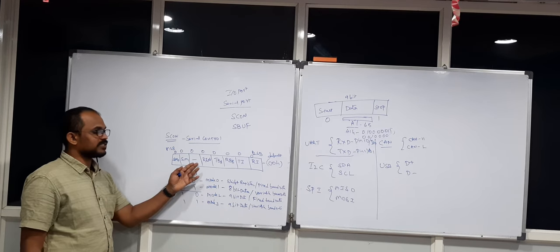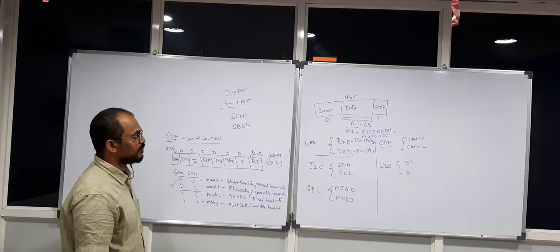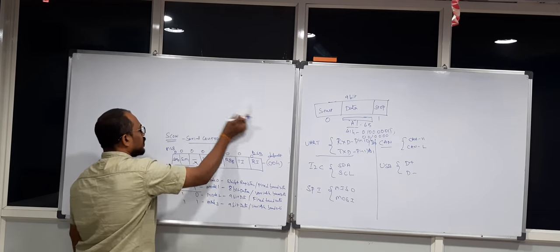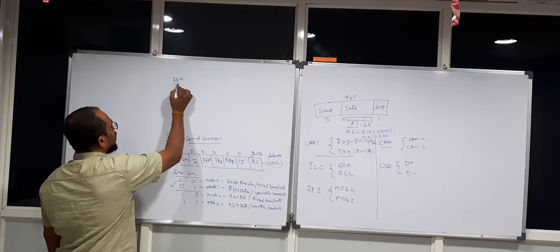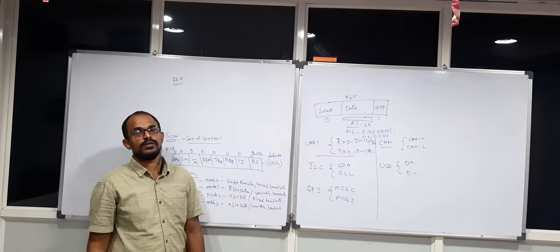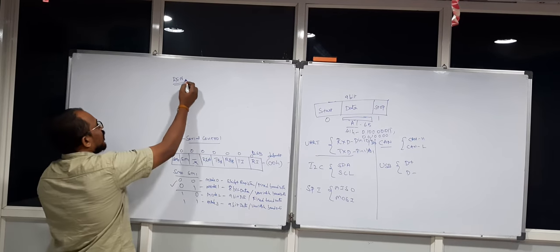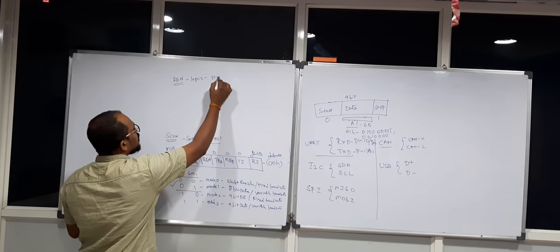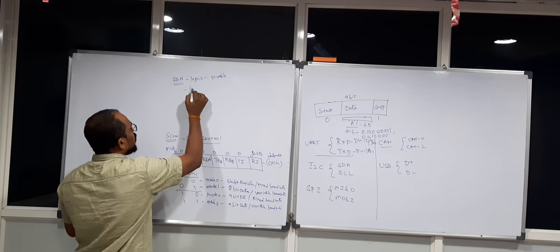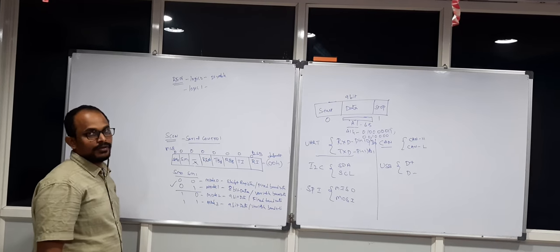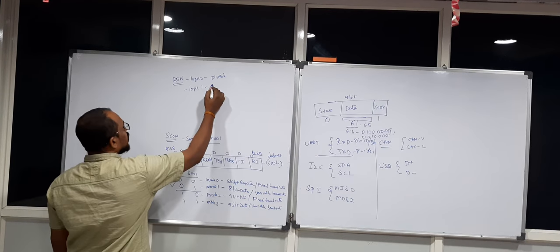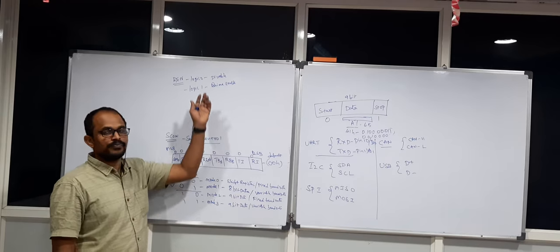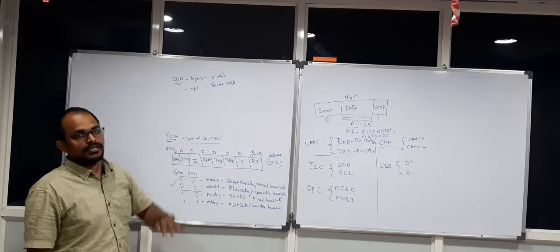The next bit is an unused don't-care bit. Then comes the REN bit — receive enable. If you are looking to receive data from an external device to the microcontroller, you must enable this REN bit. Logic 0 means receiving is disabled; logic 1 means the microcontroller accepts data from the external device. The REN bit logic decides whether you are looking to receive data or not.